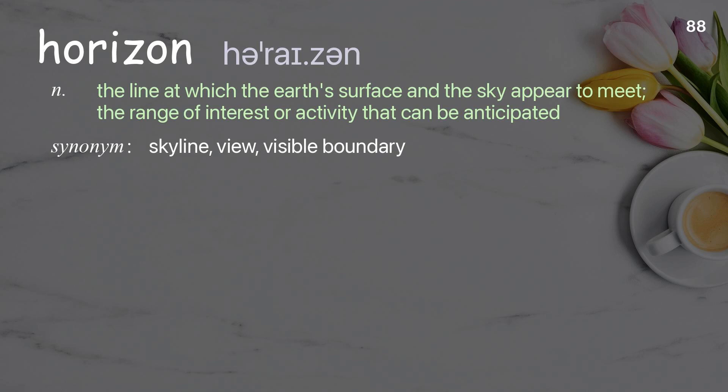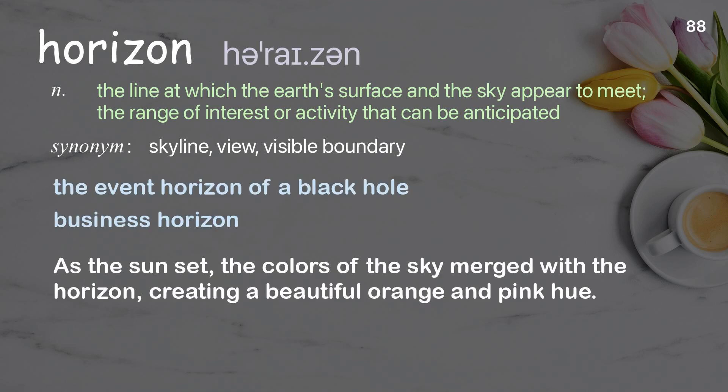Horizon: The line at which the Earth's surface and the sky appear to meet; the range of interest or activity that can be anticipated. Examples: The event horizon of a black hole, business horizon. As the sun set, the colors of the sky merged with the horizon, creating a beautiful orange and pink hue.